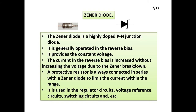Zener Diode: The Zener diode is a highly doped PN junction diode. It is generally operated in the reverse bias and provides a constant voltage. The current in reverse bias increases without increasing the voltage due to Zener breakdown. A protective resistor is always connected in series with a Zener diode to limit the current within range. It is used in regulator circuits, voltage reference circuits, switching circuits, and more.